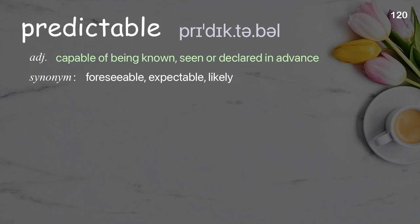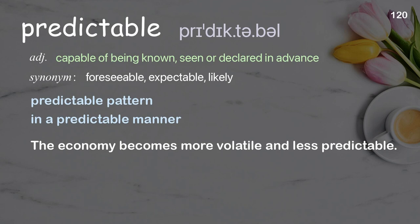Predictable: capable of being known, seen, or declared in advance. Examples: predictable pattern, in a predictable manner. The economy becomes more volatile and less predictable.